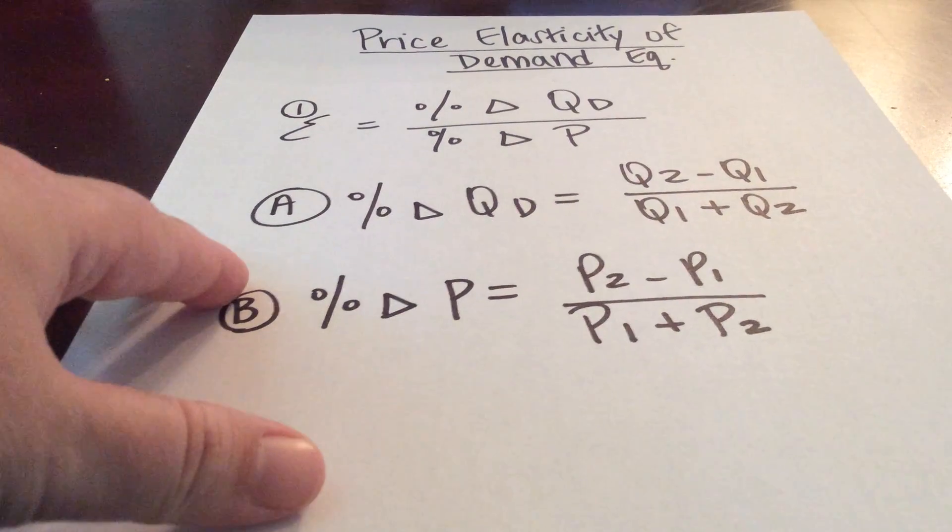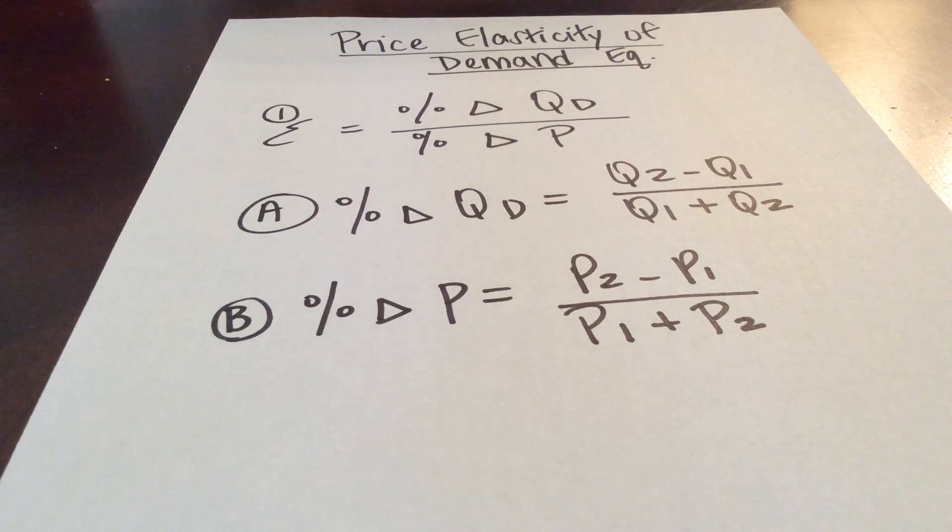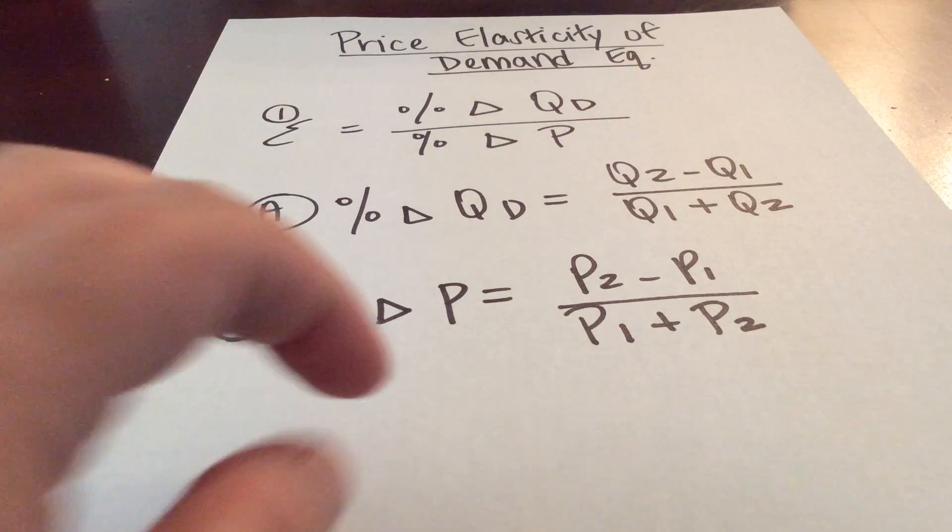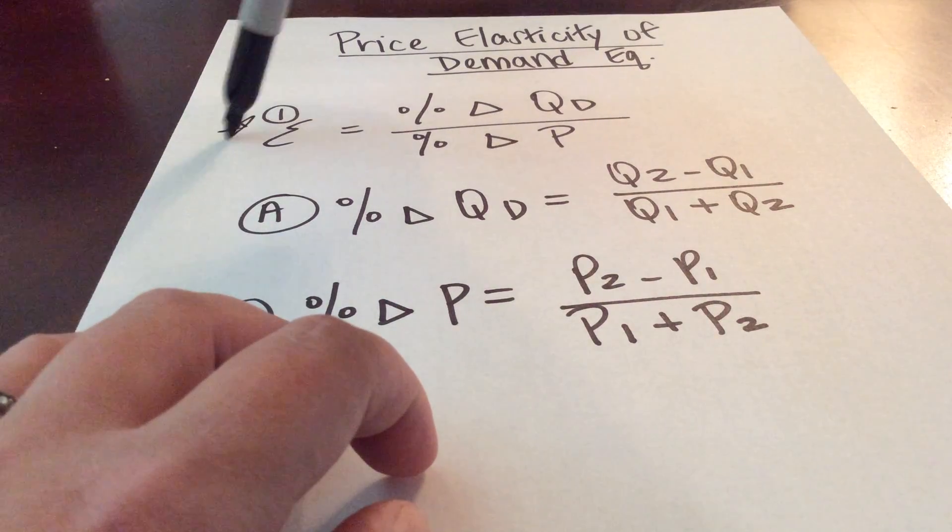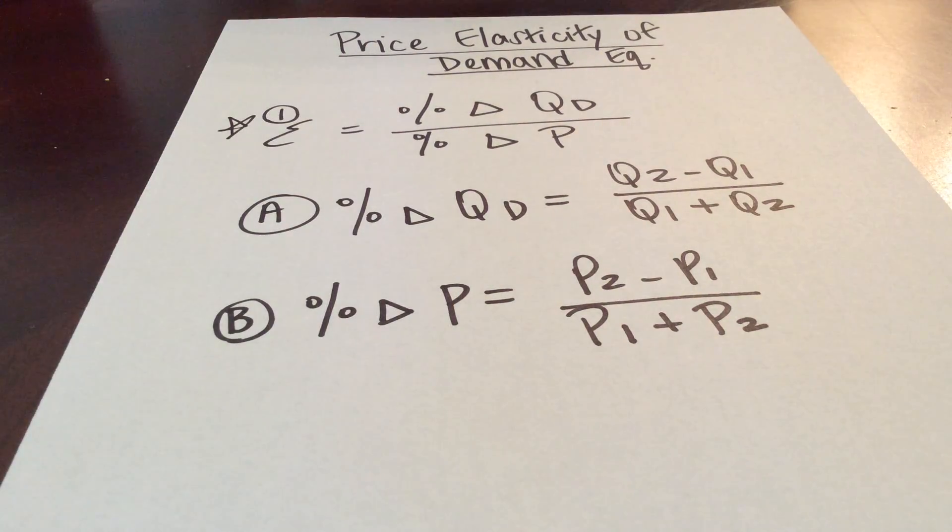So here is the equation that I'm going to use to calculate the price elasticity of demand. The main equation is right here, equation one. Our elasticity is equal to the percentage change in quantity demanded divided by the percentage change in price. Now this is the same equation that the textbook starts with, but how they go about calculating those things is a little different.